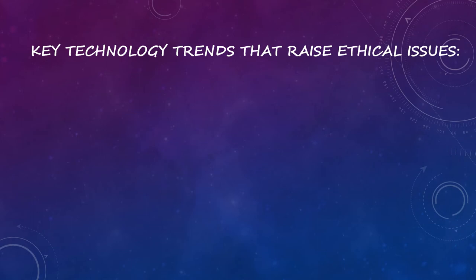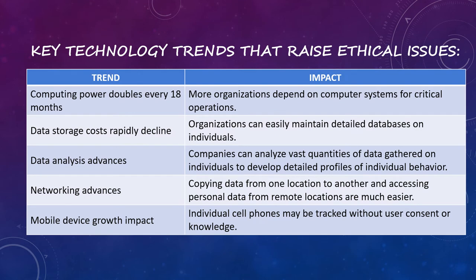Key technology trends that raise ethical issues: First, computing power doubles every 18 months. The impact is that more organizations depend on computer systems for critical operations, increasing vulnerability to system errors and poor data quality. Second, data storage costs are rapidly declining. The impact is that organizations can easily maintain large databases on individuals, making violations of individual privacy both cheap and effective.